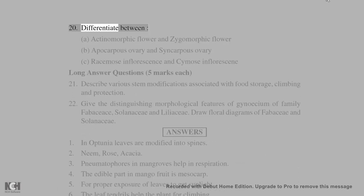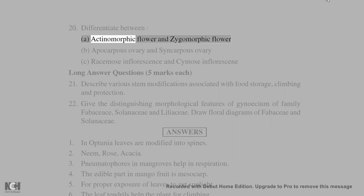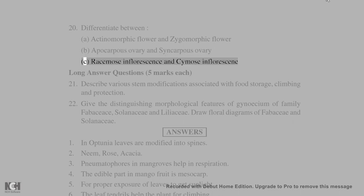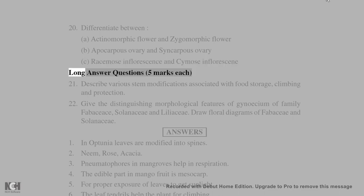20. Differentiate between: A. Actinomorphic flower and zygomorphic flower. B. Apocarpous ovary and syncarpous ovary. C. Racemose inflorescence and cymose inflorescence.